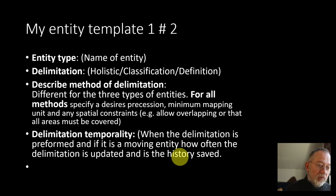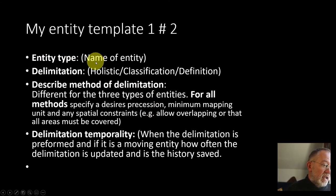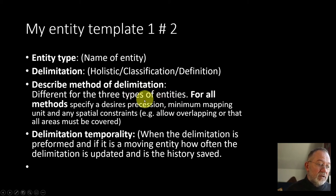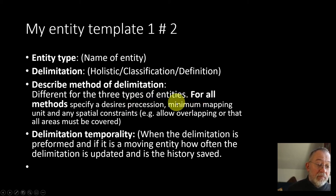If we talk about how to describe it using a text form, I normally follow this structure: the entity type name, how it's delimited — whether it's a tangible or holistic unit — whether it's classified through a classification such as salinity, or through definitions such as municipality. I also describe the desired position and how precisely we want to delimit it, and what is the minimum mapping unit — the smallest thing we can register.